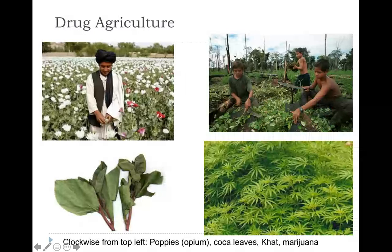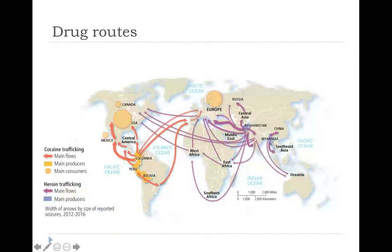Here are some of the different crops: on the top left we have poppies, which eventually become heroin or opium; we have coca leaves in the upper right, which can be refined down to cocaine; we have khat on one side and marijuana on the other. Here are some of the major drug routes — we see a lot of them going into the more developed parts of the world, leaving developing regions and heading to places like North America and Western Europe.